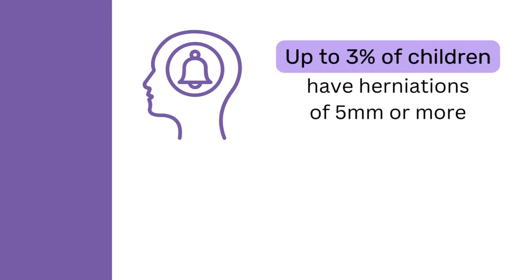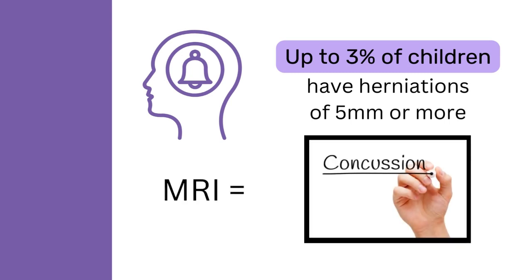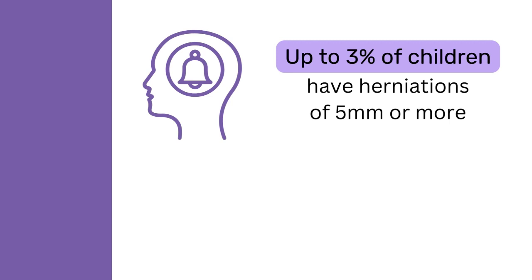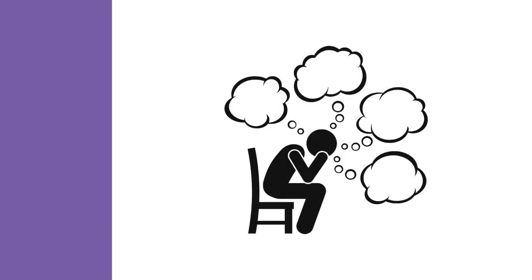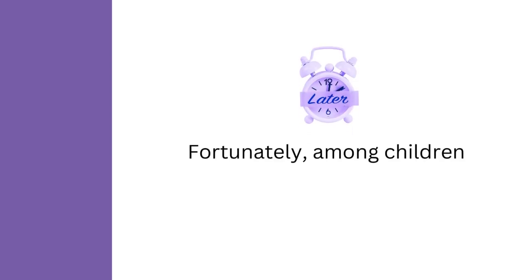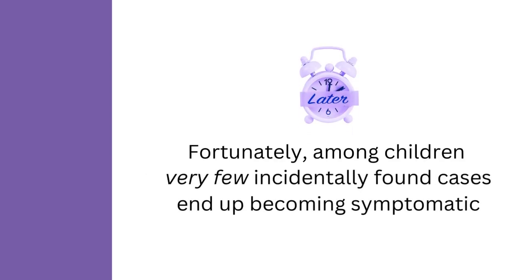Recall that up to 3% of children actually have cerebellar herniation of 5 mm or more. So if someone gets an MRI due to concussion-related issues, and they are one of those 3%, it will likely be noted by the radiologist. This can be worrisome for patients who aren't sure what to make of it. But fortunately, among children, very few incidentally found cases end up becoming symptomatic in the near to medium future.